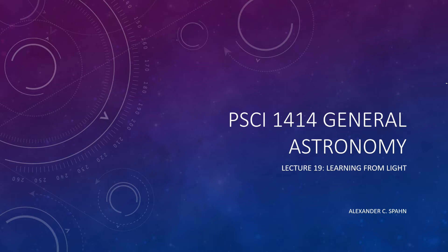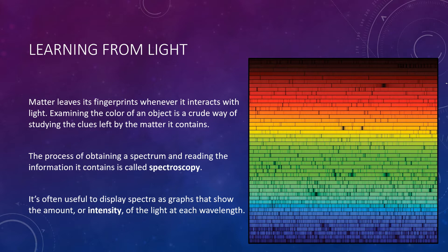Hello and welcome to General Astronomy Lecture 19, Learning from Light. Matter leaves its fingerprints wherever it interacts with light. Examining the color of an object is a crude way of understanding the clues left behind from the matter it contains. For example, a red shirt absorbs all visible photons except those in the red part of the spectrum, so we know it must contain a dye with these special light-absorbing characteristics.